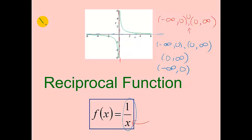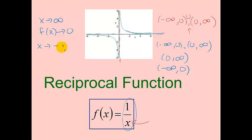Looking at the end behavior of the reciprocal function: as x approaches infinity, this function is approaching zero — you can see as we get larger and larger we're getting closer and closer to zero. And as x approaches negative infinity, this function again is approaching zero.